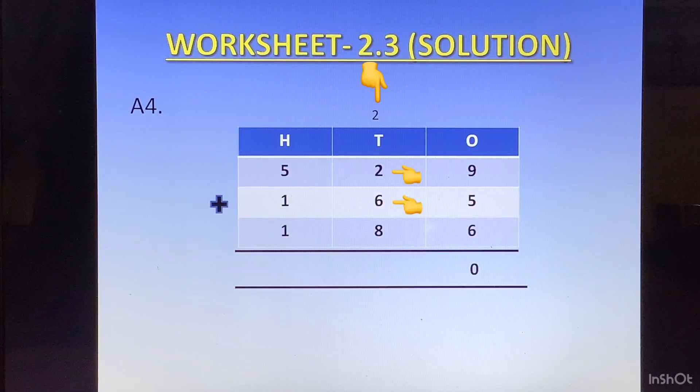In tens column we have 2 plus 6 is 8, plus 8 is 16, and plus 2 of the carry making it 18. 1 will go at the top of hundreds column, 8 will come at the bottom of tens column. In hundreds column we have 5 plus 1 is 6, plus 1 is 7, and 1 of the carry is 8. So the answer becomes 880.